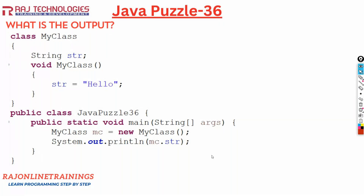Welcome to Raja online trainings. In the series of Java puzzles, let us go with one more new puzzle in this video. Here we have taken a class MyClass with a data member string str, and we have taken a method myClass in which we are assigning str equal to hello.